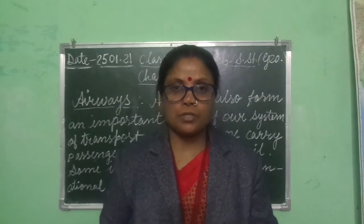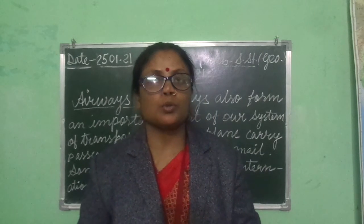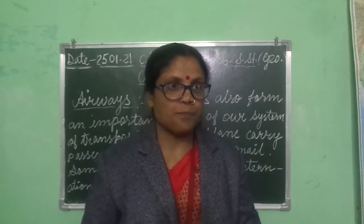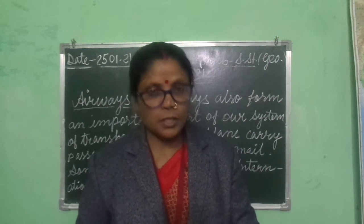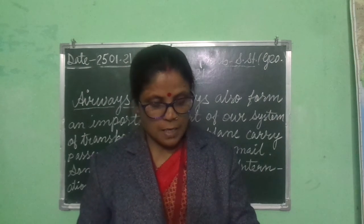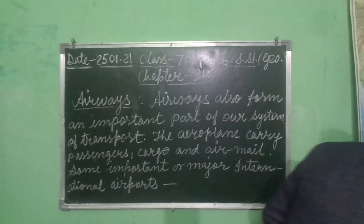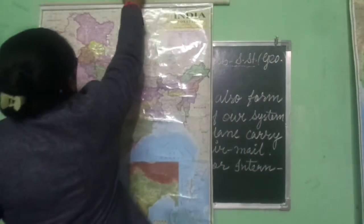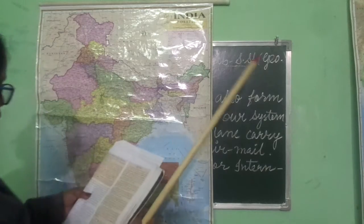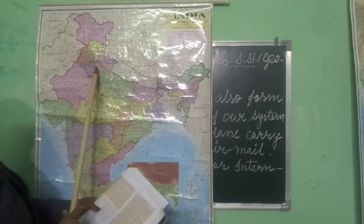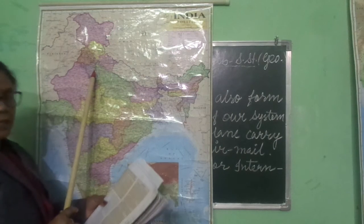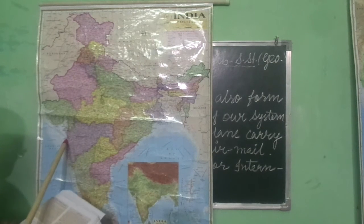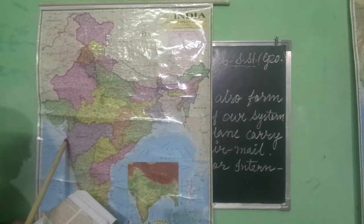In our country there are about 95 aerodromes, and some important major international airports. The first is Delhi — Indira Gandhi International Airport. The second is Mumbai — Chhatrapati Shivaji International Airport terminus. I will show you these on the map.